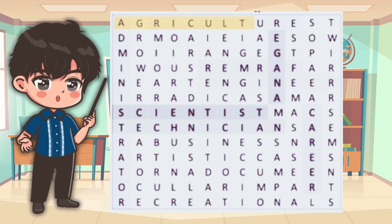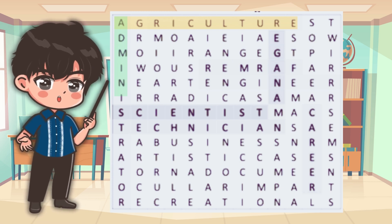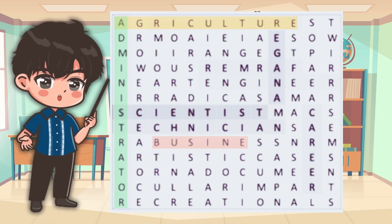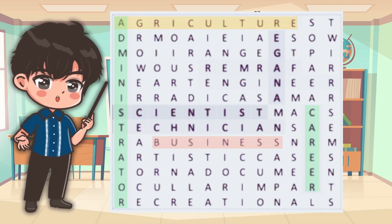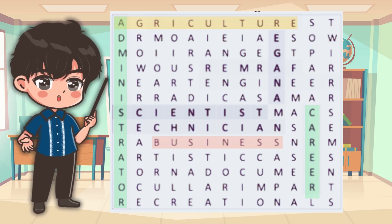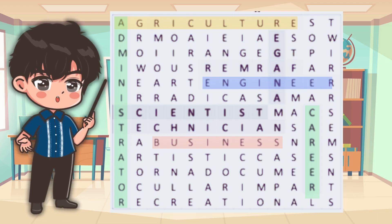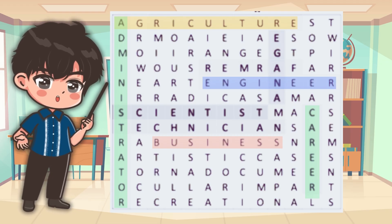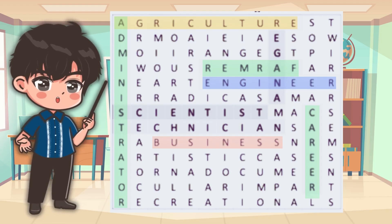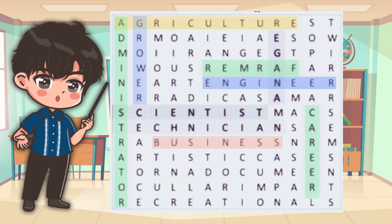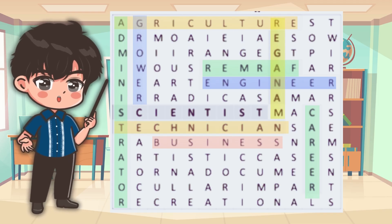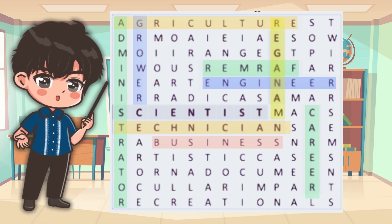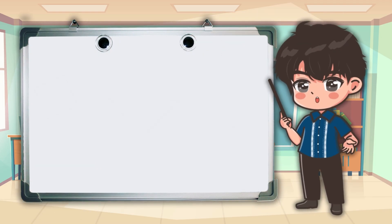We identified the following words from the board: agriculture, administrator, business, career, engineer, farmer, grower, manager, and technician.